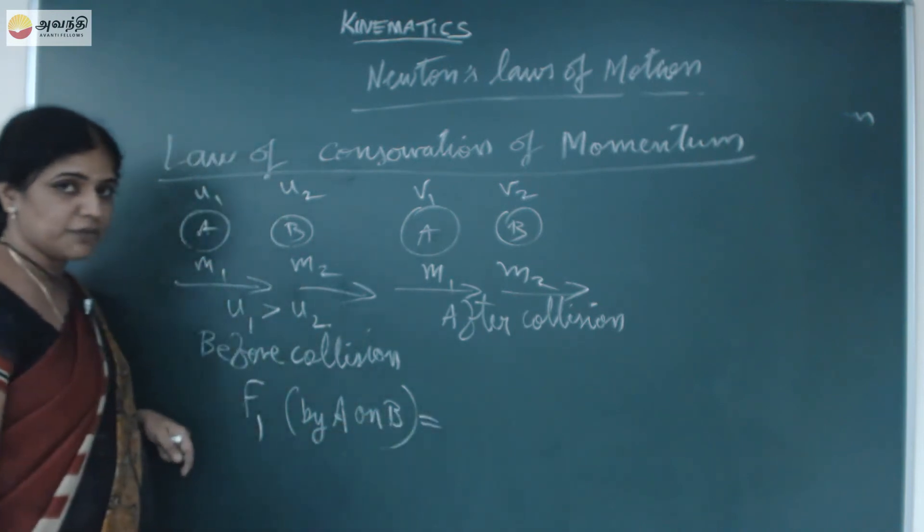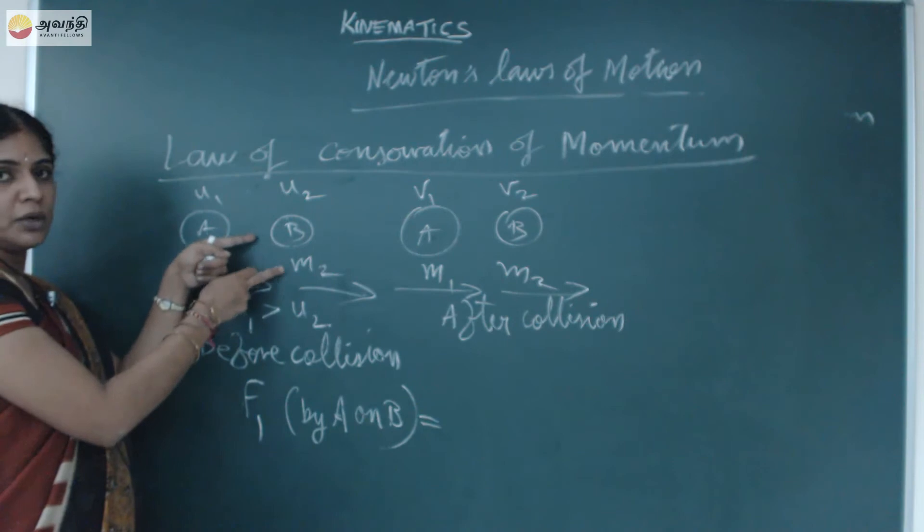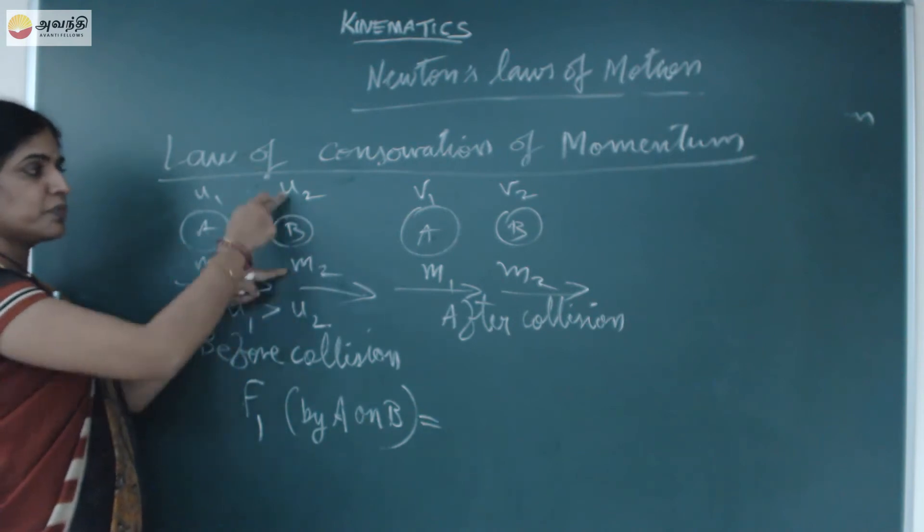According to Newton's second law, F is equal to, the force on object B, object B has mass m2, velocity u2.